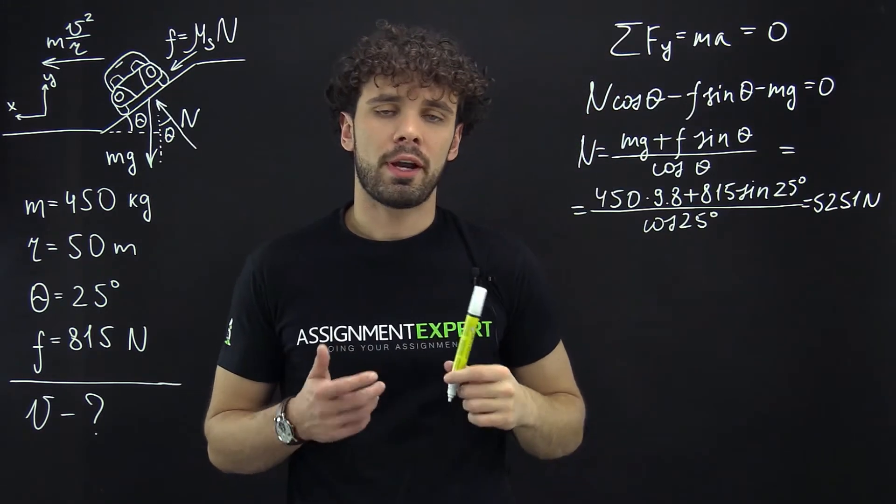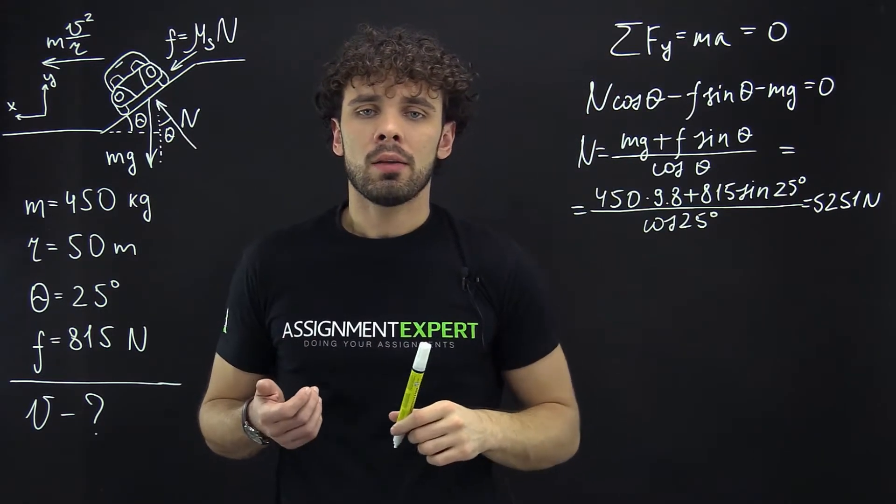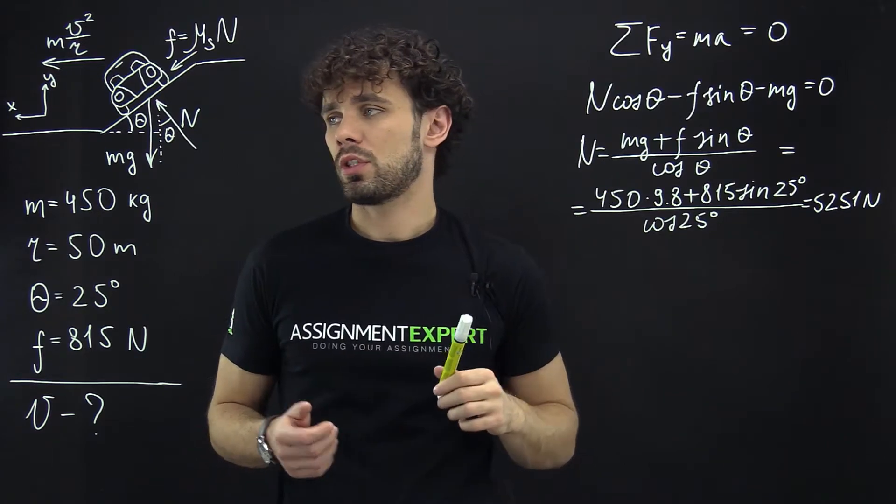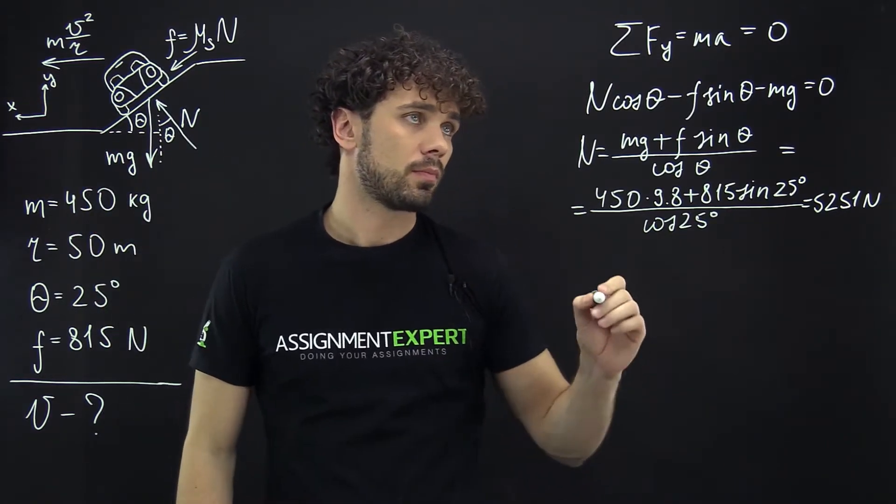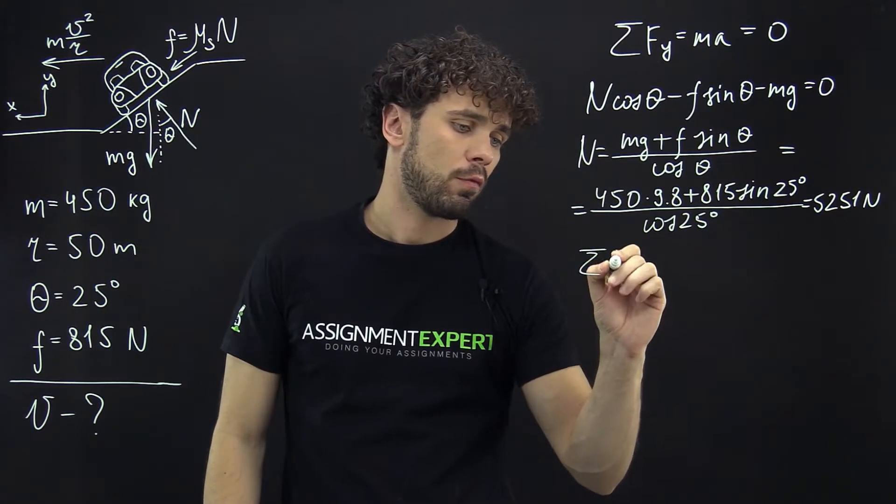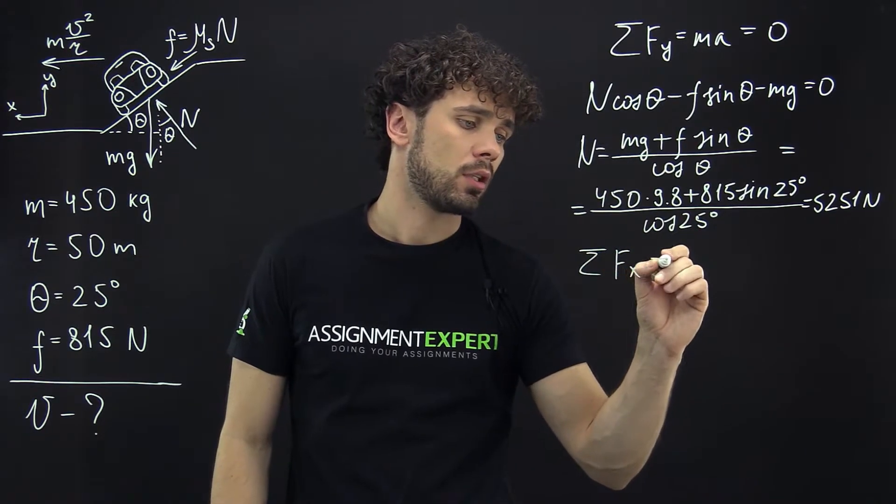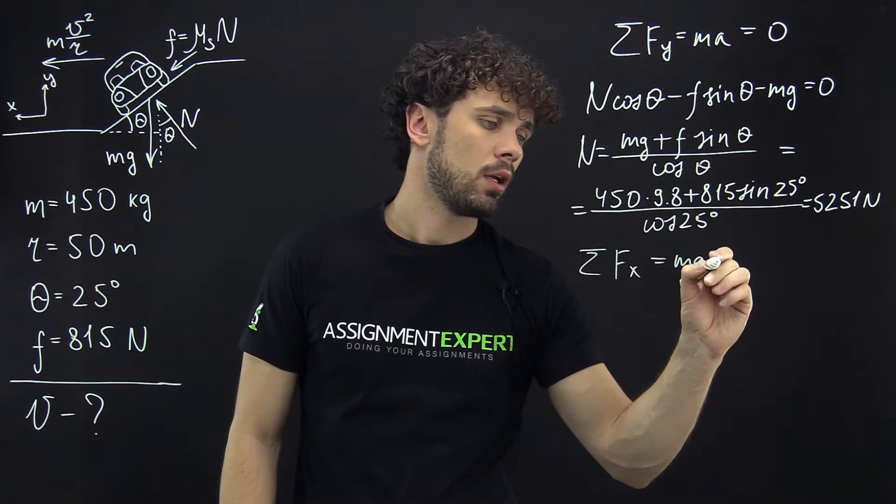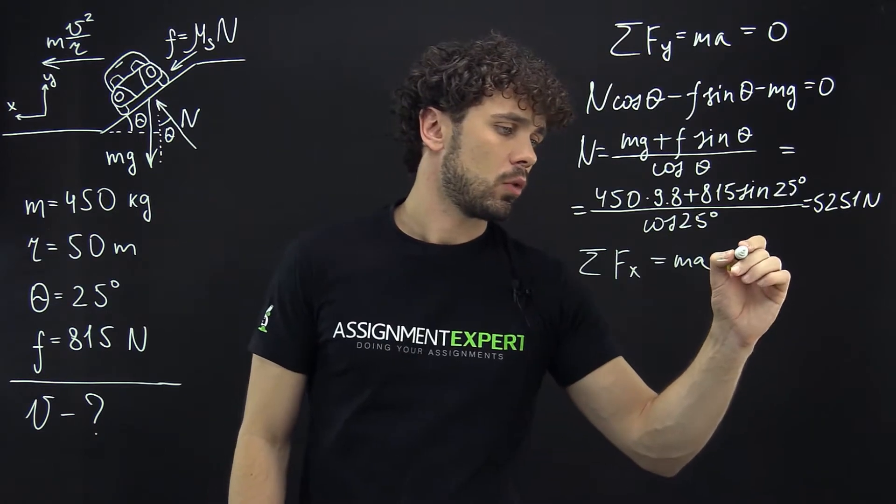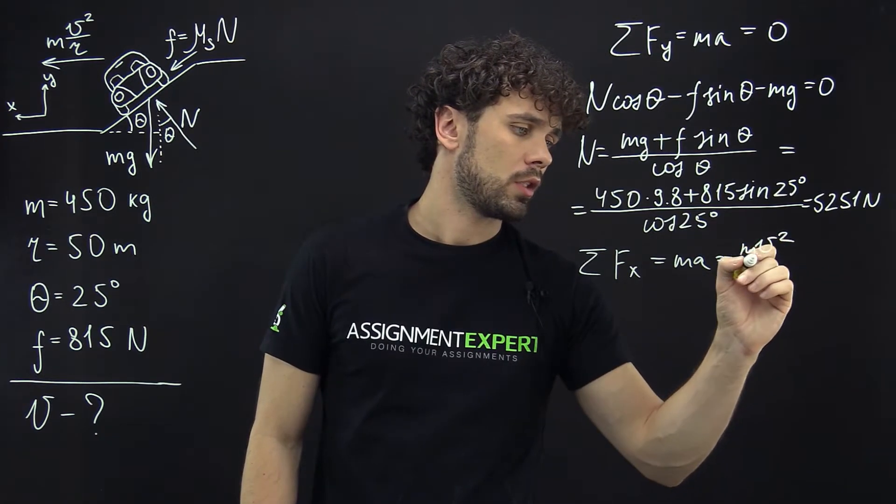So this is our reaction force. Now let's write the sum of all forces for the x-axis. We have sum of forces in x equals ma, and this time this equals mv² over r.